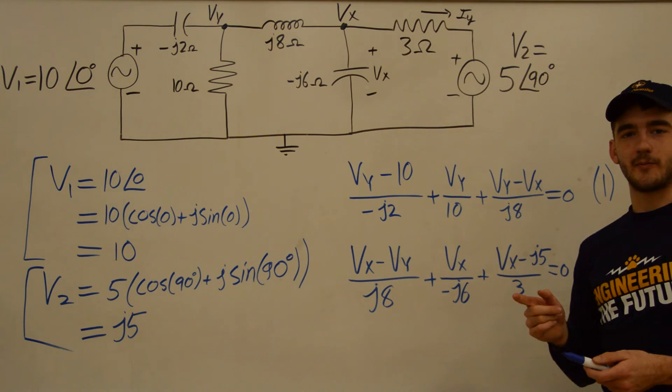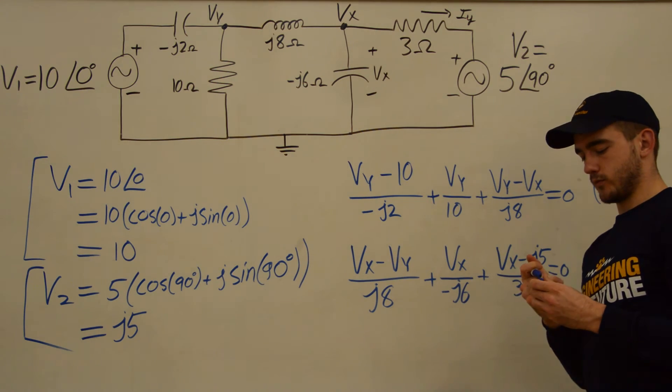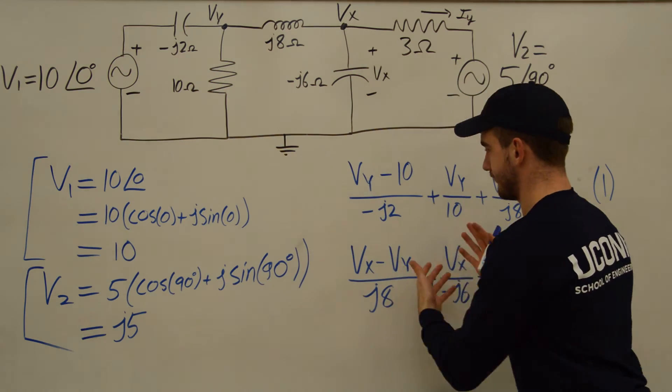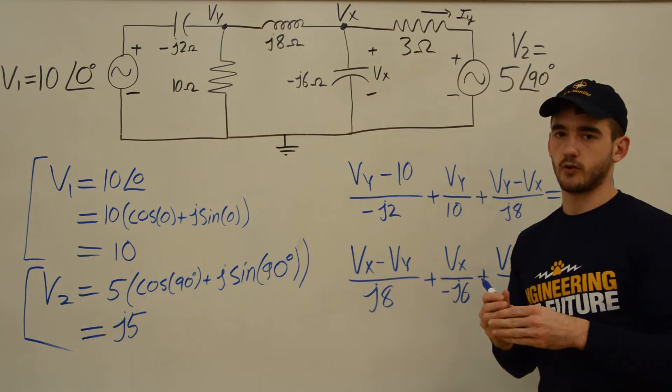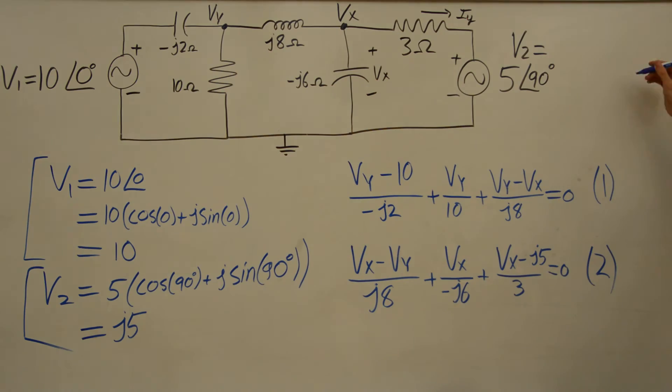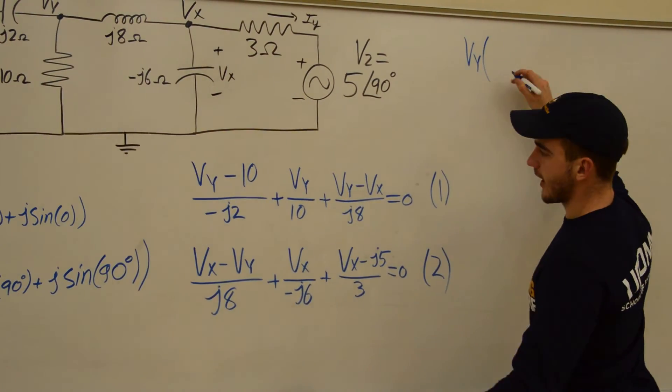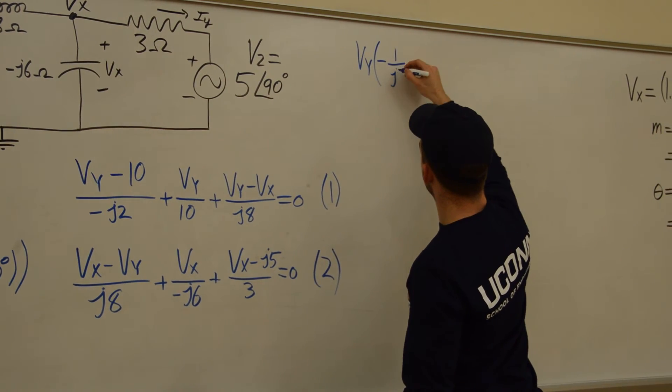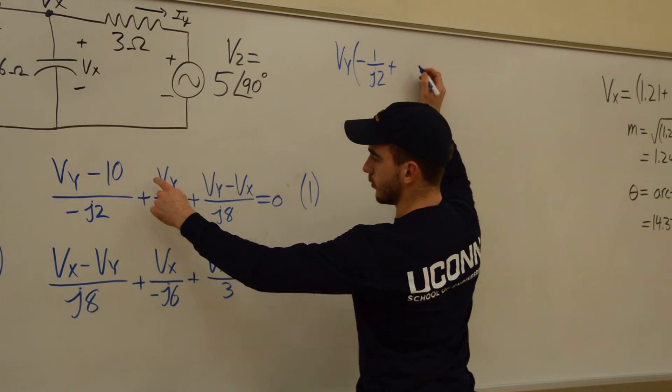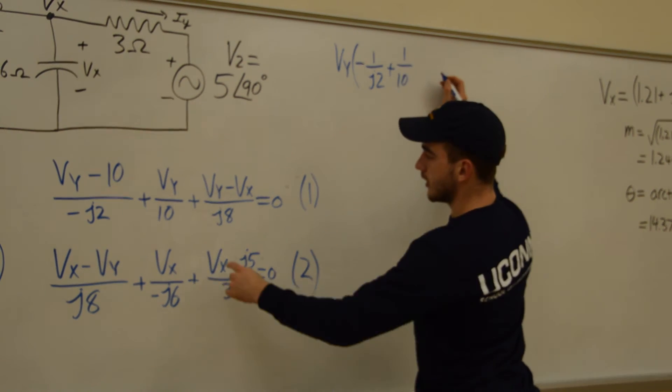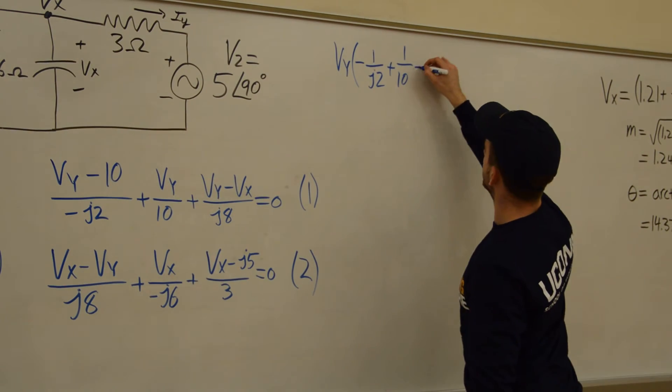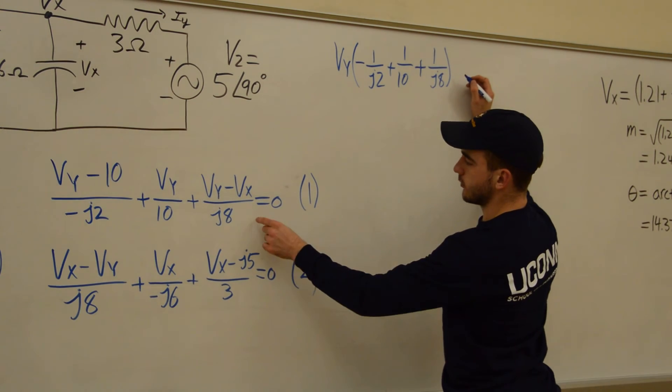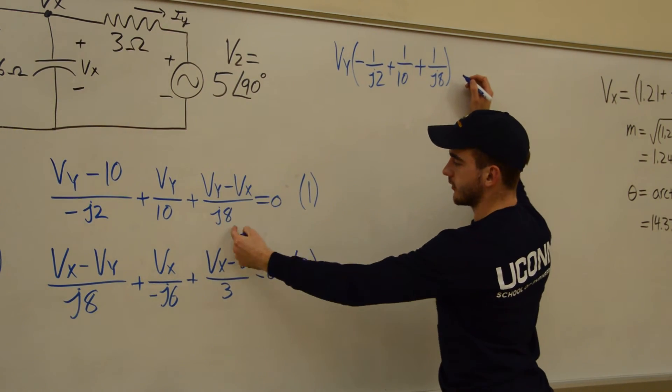So I'll go one step further. But the main point here is to help you with configuring this AC steady state circuit and not solving a system of equations. So we're just going to simplify by one more step here. So we'll have Vy times negative 1 over J2 plus 1 over 10 plus 1 over J8 equals Vx over J8.